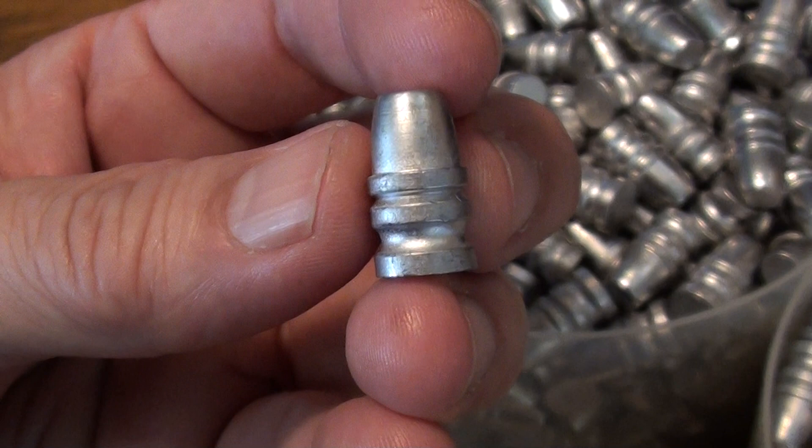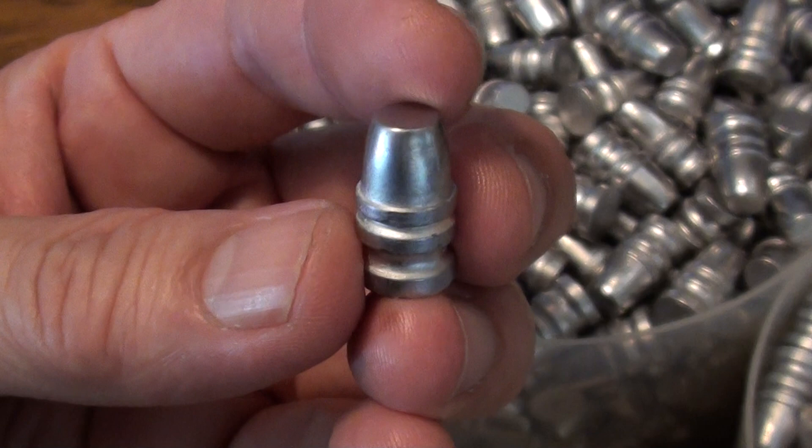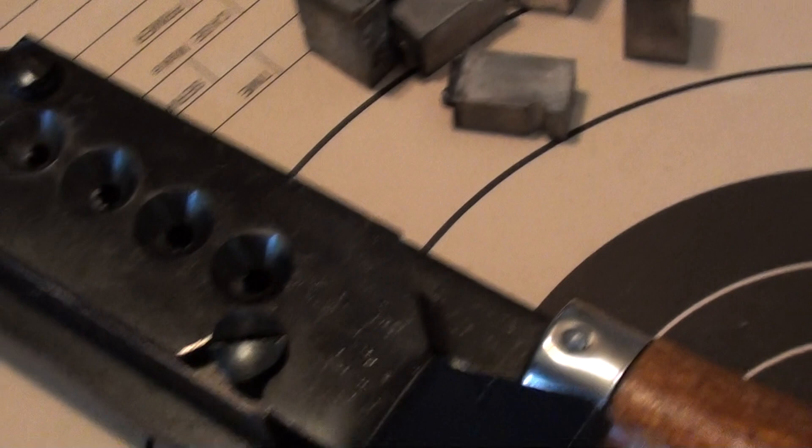This is a 245 grain Keith semi-wad cutter cast from the Lyman 429421 mold, of which this is it right here.